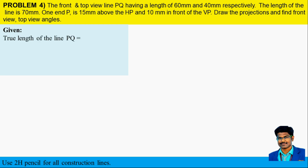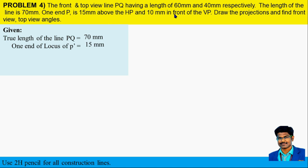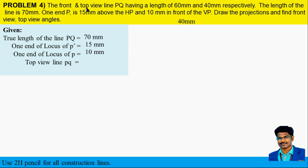Note on the given details: true length of line PQ is 70 mm; one end — locus of P-dash is 15 mm above the HP and locus of P is 10 mm in front of the VP; top view line PQ is 40 mm and front view line P-dash Q-dash is 60 mm.